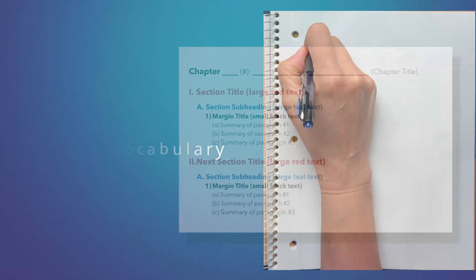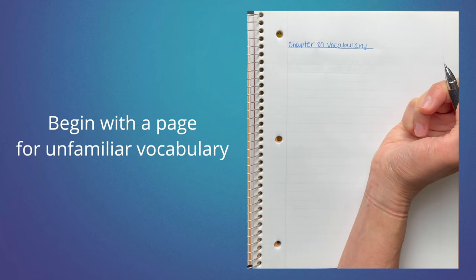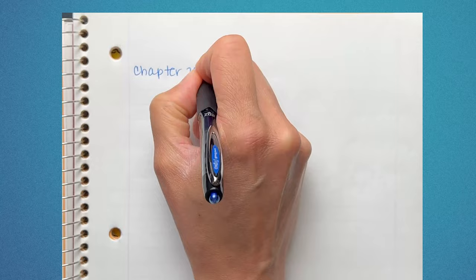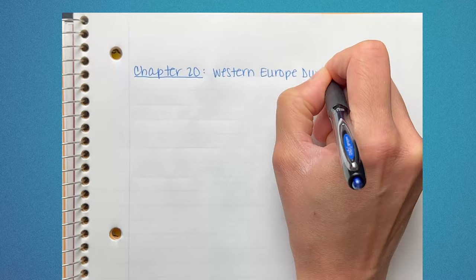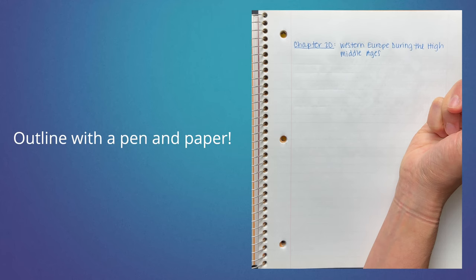Let's move back to the beginning of the chapter and begin our outline. In my notebook, my first task is to designate a page for unfamiliar vocabulary that I will later write down and define. At the top of the page, write chapter 20 vocabulary. One sheet of paper, front and back, should be all the space you need. At the top of the next page, I will write chapter 20, Western Europe during the High Middle Ages. Notice that I am choosing to handwrite rather than type my work. Many studies have shown that handwriting increases the likelihood that information will be retained, so I would recommend outlining with pen and paper whenever possible.